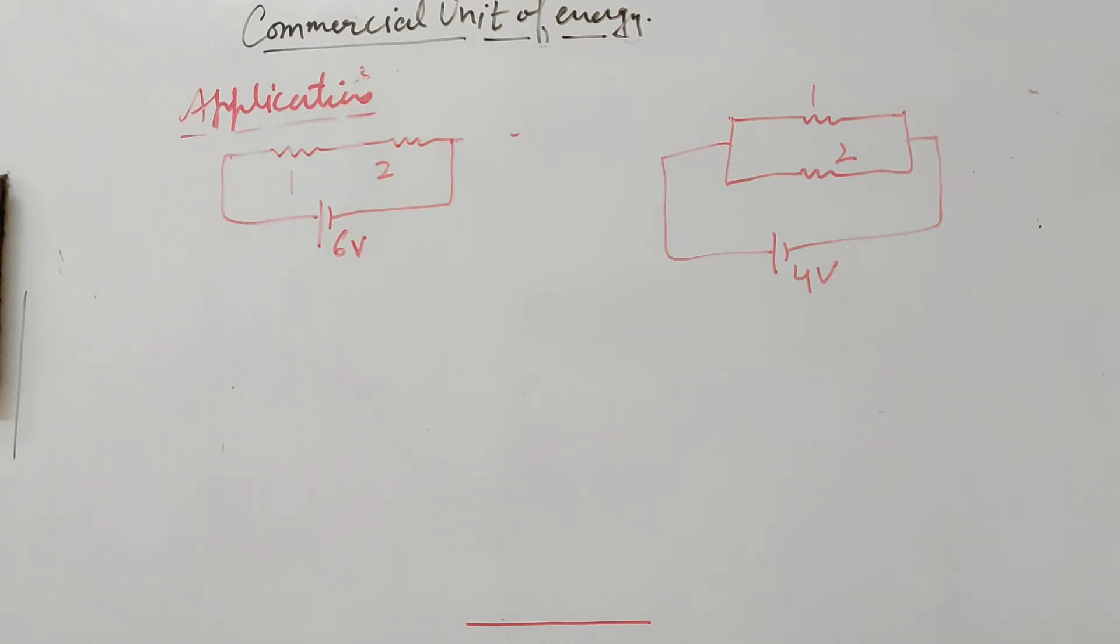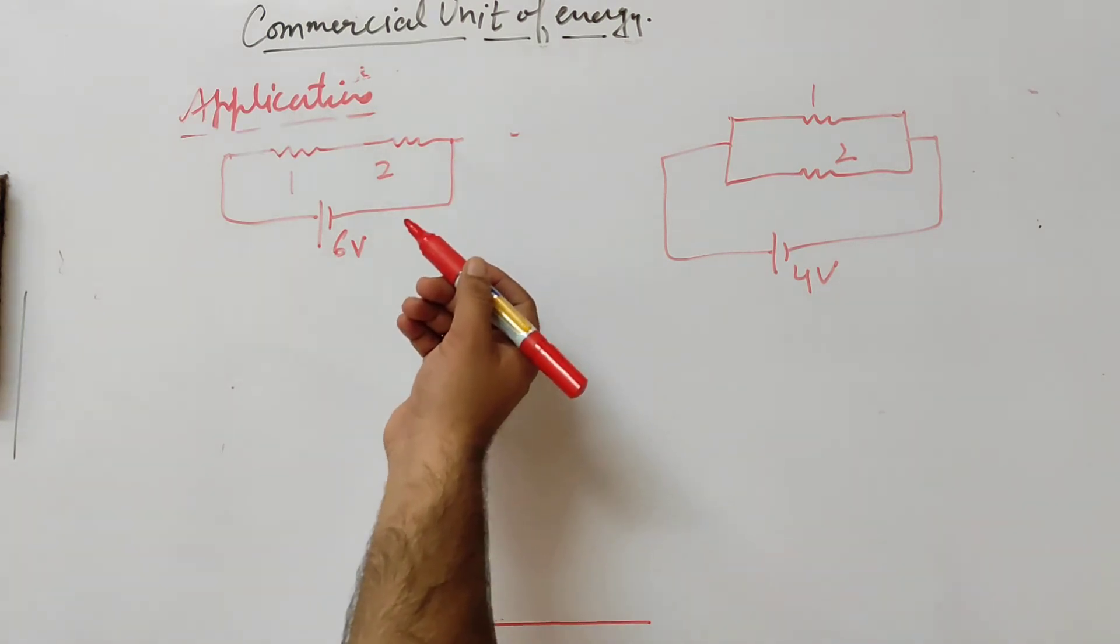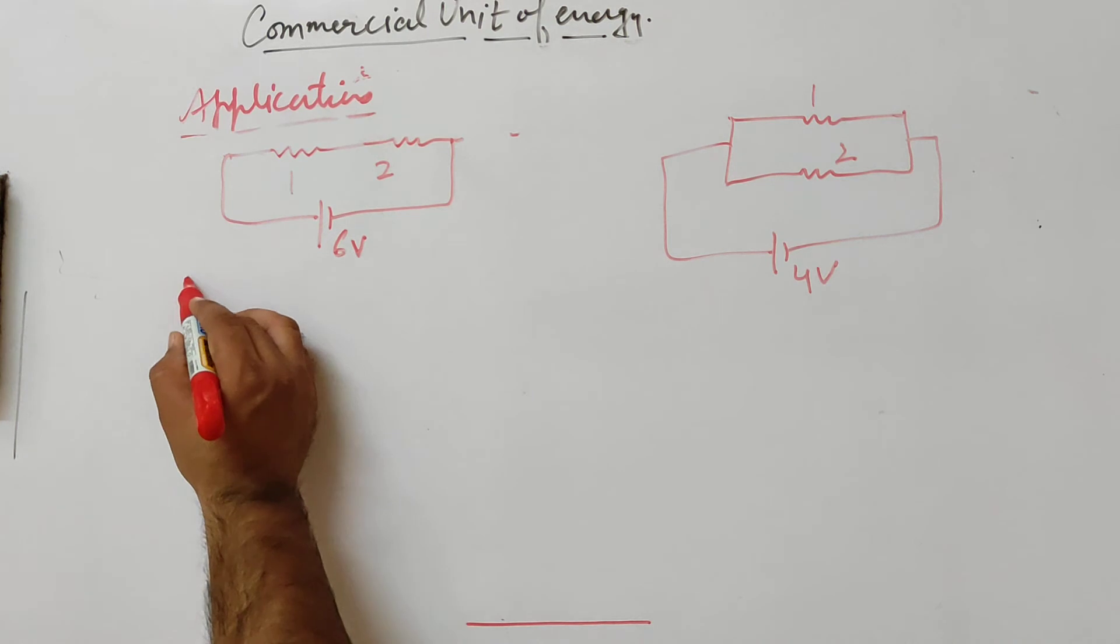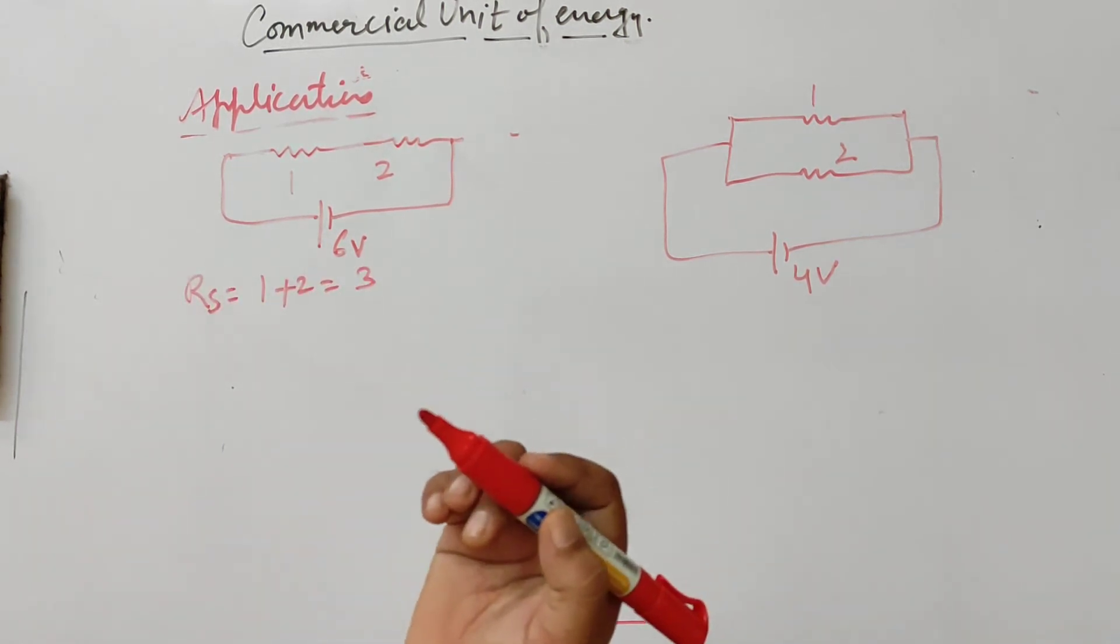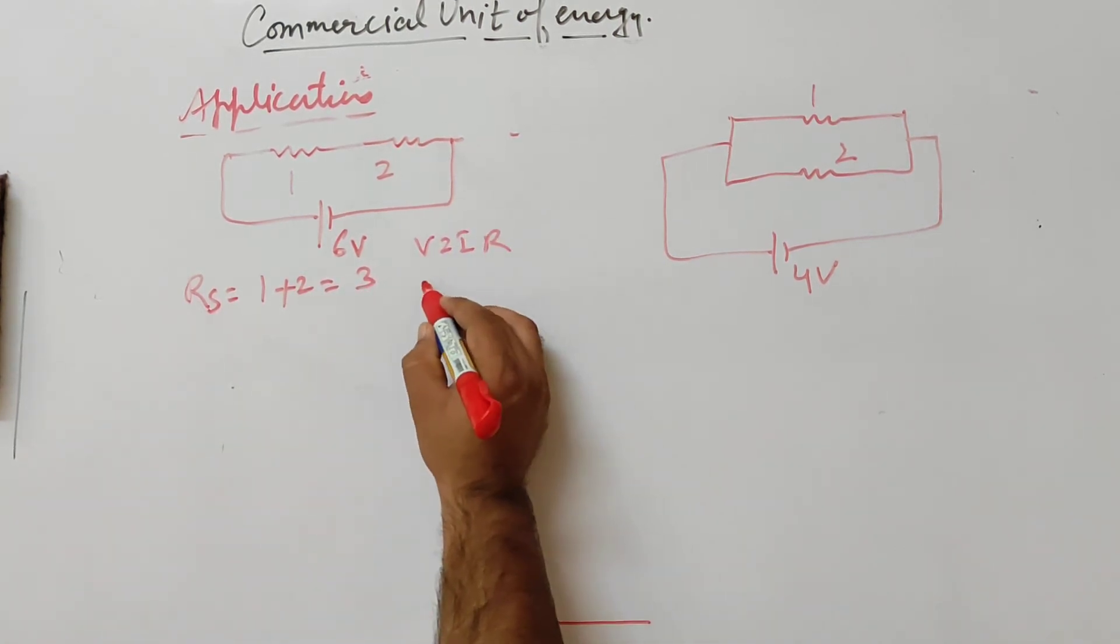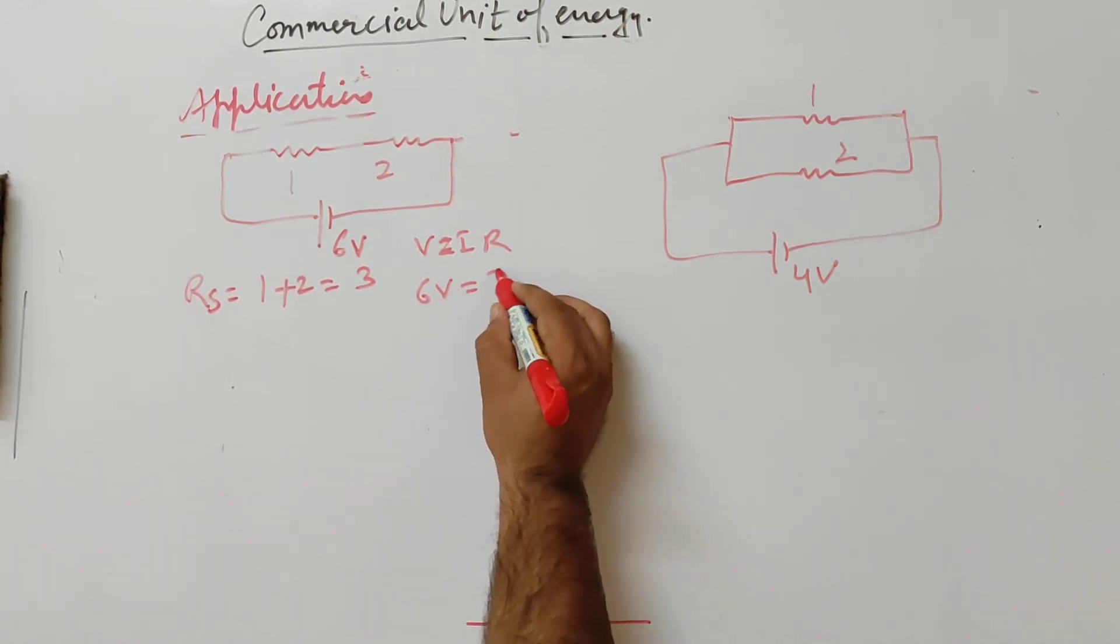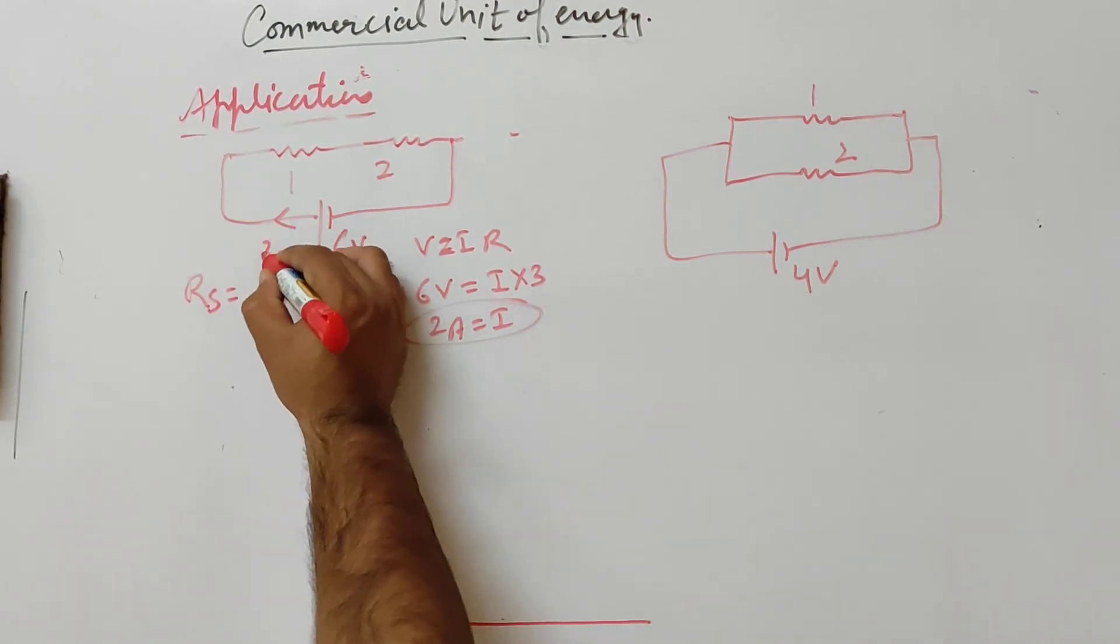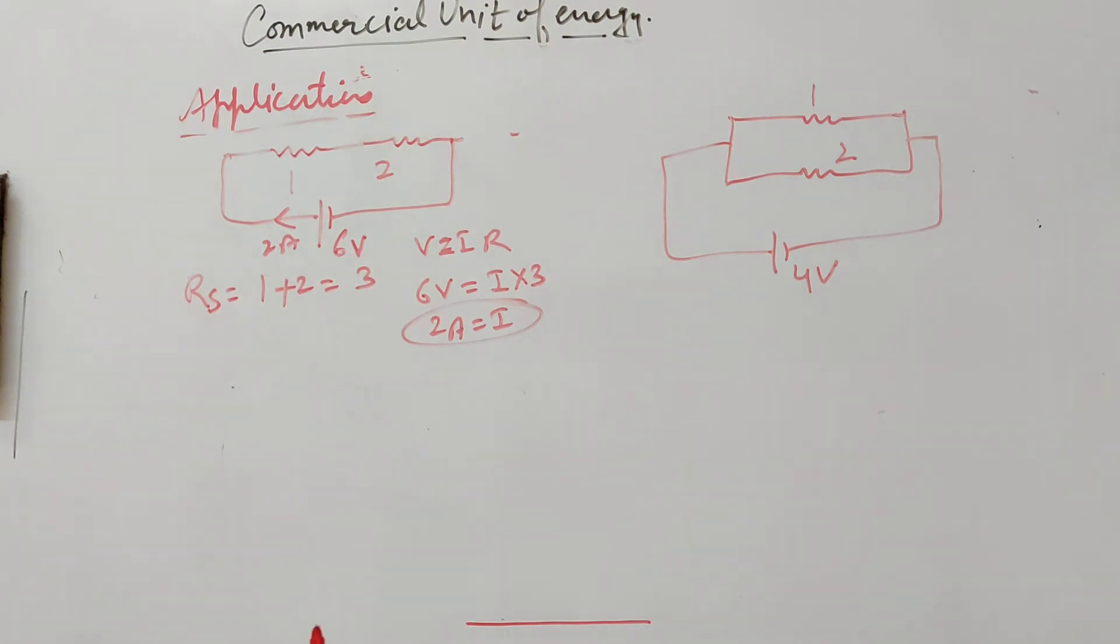Here we have power used with 2 ohm resistance. If it is in series then voltage will be different. Resistance is 1 plus 2 equals 3. V equals IR, 6V equals I into 3. Current is 2 ampere. Net resistance is 3.